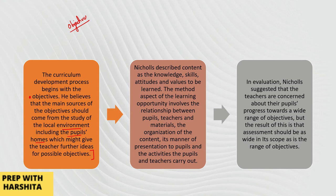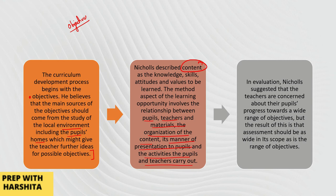Nicholls ने content को knowledge, skills, attitudes और values to be learned के रूप में describe किया। Methods की बात करें तो learning opportunity में pupil, teacher और materials के बीच का relationship शामिल है — content का organization, pupils के सामने उसकी presentation का तरीका, और वो activities जो pupil और teacher carry out करते हैं — इन सब के आधार पर learning होती है।